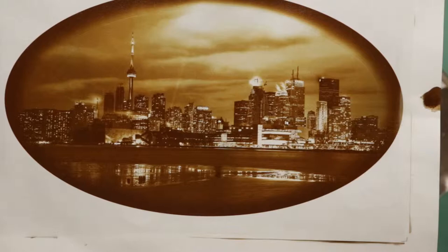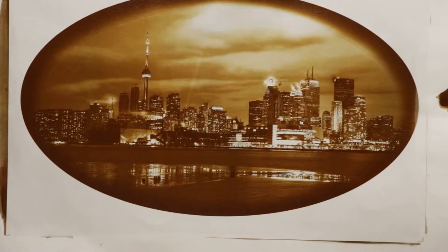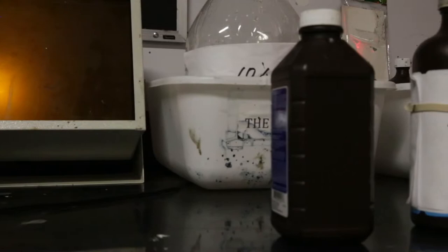The Van Dyke photo process is an iron-based printing method from 1842. It was developed by John Herschel and the process was famous for its brown and sepia tone.